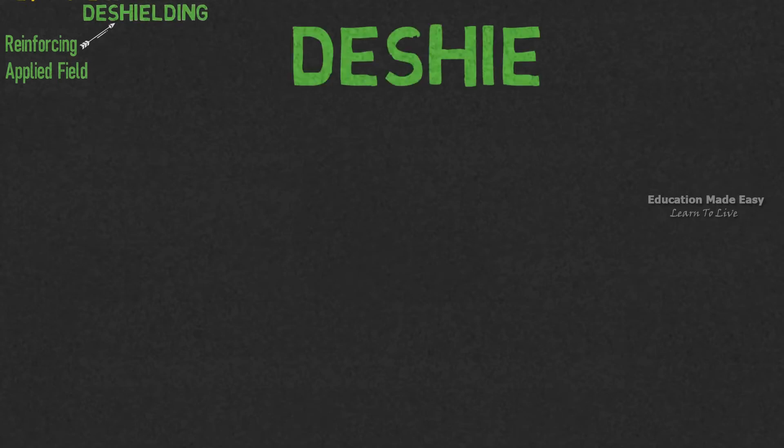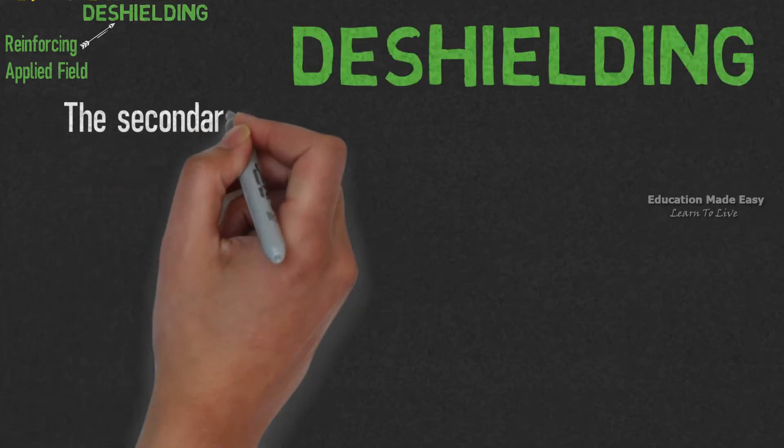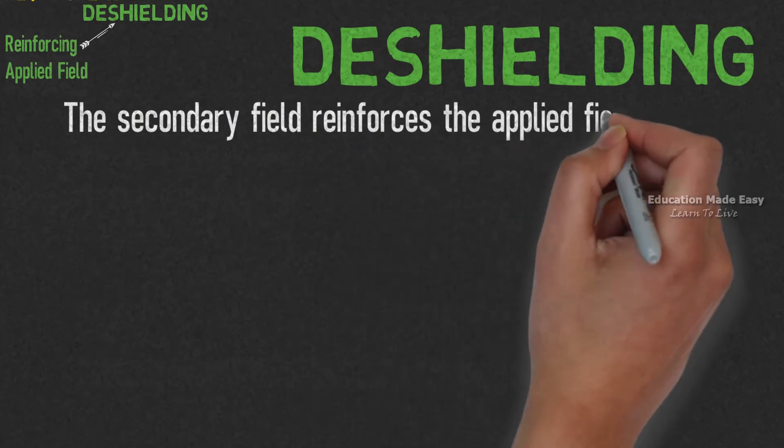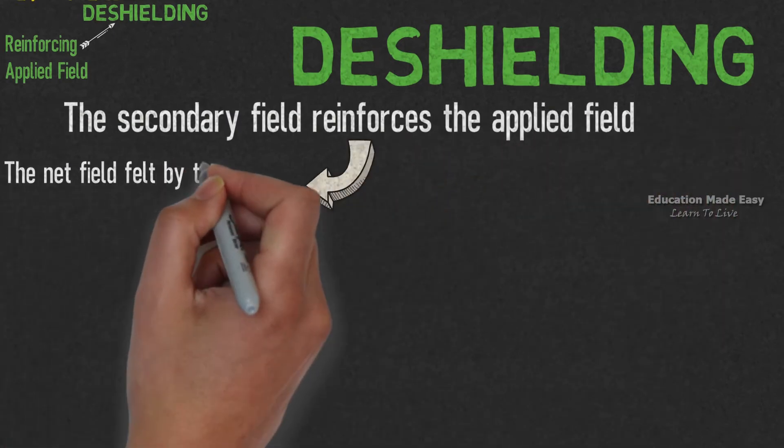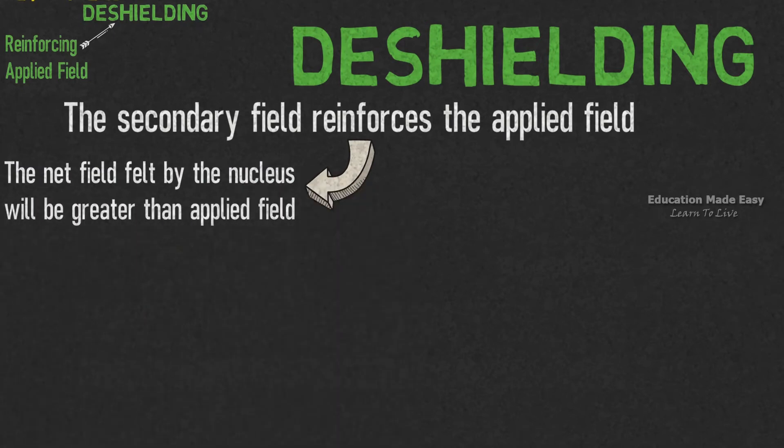Now let us learn about the secondary field which is reinforcing the applied field and causes the deshielding effect. Deshielding means the secondary field reinforces the applied field. Reinforcing means the net field felt by the nucleus will be greater than the applied field.